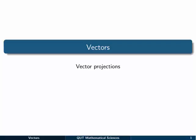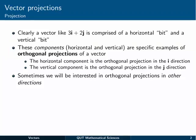Vector projections are another use of scalar products of vectors. They're a little bit more involved than simply calculating vectors, but they're a lot more useful as well. Clearly, a vector like 3i plus 2j is comprised of a horizontal bit, 3i, and a vertical bit, 2j.